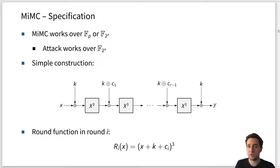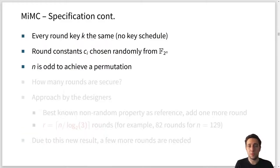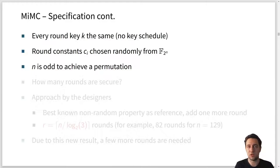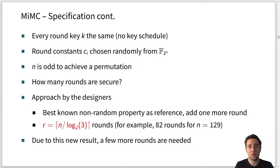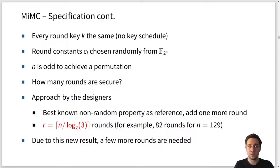The round function basically consists of a key addition, a round constant addition, and the cubing operation. In MiMC, every round key is the same — there is no key schedule. The round constants are chosen randomly from the finite field, and the field size M is odd to achieve a permutation for the cube function. The question is how many rounds are secure. The designers' approach was to choose the best known non-random property as a reference and add one more round on top. This gives 82 rounds for the 129-bit version. However, due to our new results, a few more rounds are actually needed.